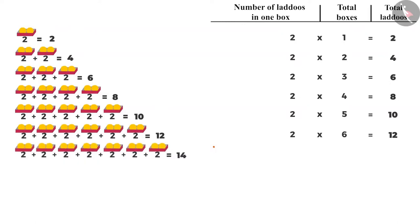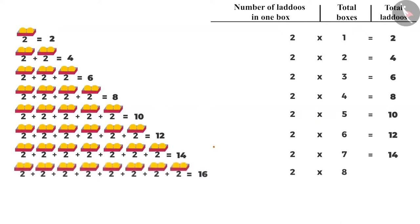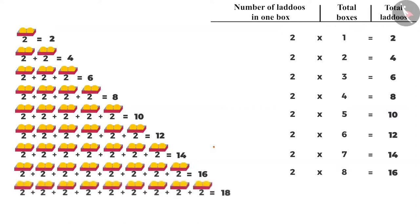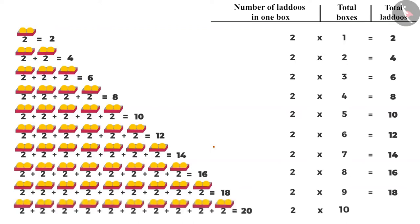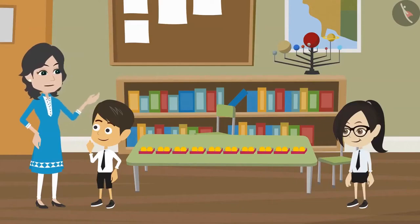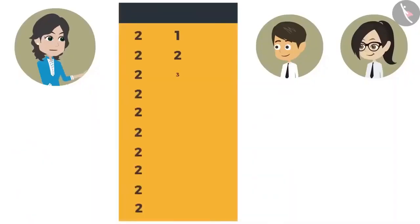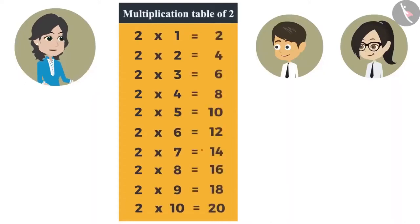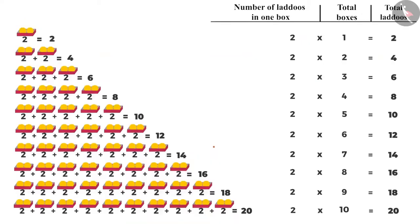Number of ladoos in seven boxes will be two multiplied by seven, that is fourteen. Number of ladoos in eight boxes will be two multiplied by eight, that is sixteen. In nine boxes, it will be two multiplied by nine, that is eighteen. And the number of laddus in 10 boxes will be 2 multiplied by 10, which comes to 20. It is easier to multiply two numbers than adding the same number again and again. Yes, that is why it is very important to memorize the tables. Otherwise, you have to use a pen and paper even for simple calculations.